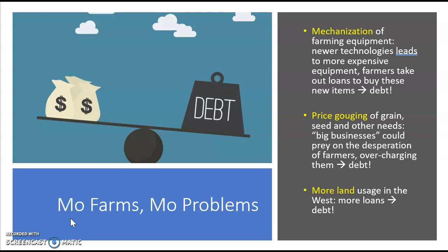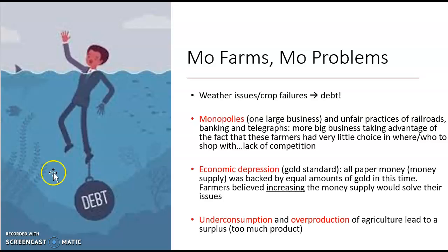The big, bad industrial system is taking advantage of these farmers, and that of course leads to debt. Also, with Manifest Destiny, as people go out wanting to farm there's more opportunity for more land, so in a lot of cases they're going to the bank again for that and taking out more debt. So you can start to see lots of problems for the farmers.